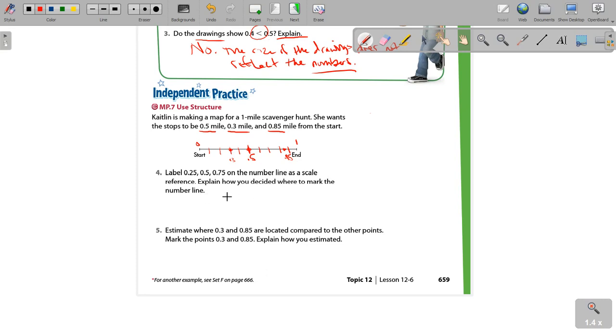Now, they want us to label 0.25, 0.5, 0.75 on the number line as a scale reference. Explain how you decided where to mark the number line. Well, remember what I mentioned about scale. So 0.5 is halfway between the start and the end. 0.25 is halfway between the start and 0.5, and 0.75 is halfway between 0.5 and the end. So that's what I would write there.